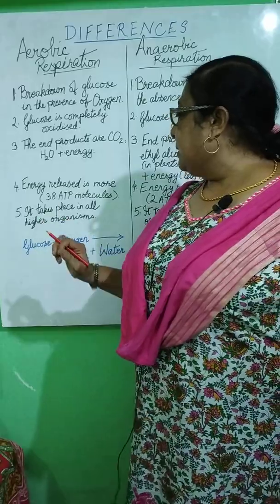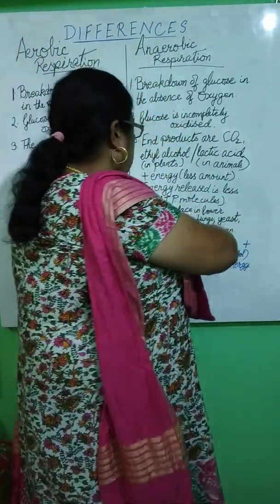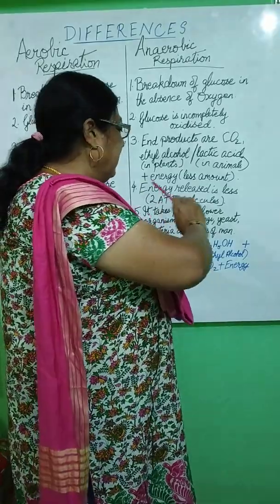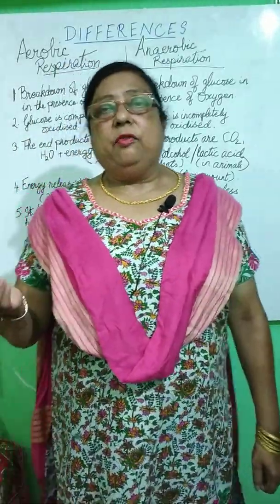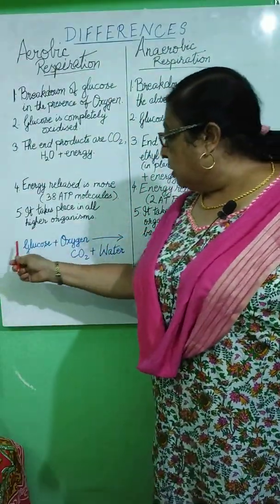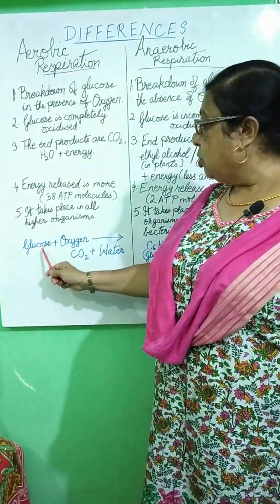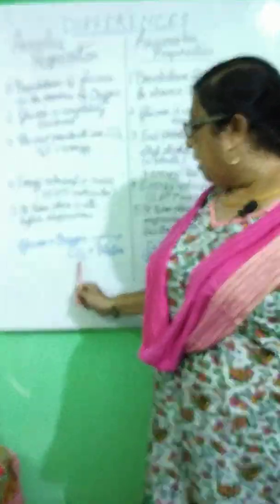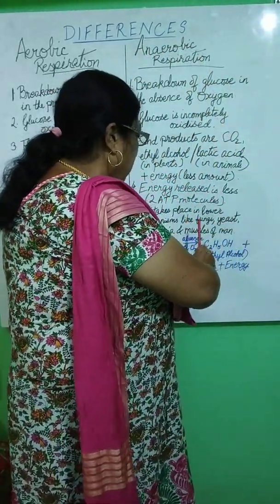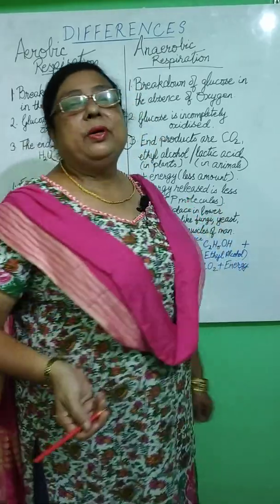Aerobic respiration takes place in all higher organisms, while anaerobic respiration takes place in microorganisms like fungi, yeast, and bacteria, in some parasitic forms, and also in the muscle cells of humans. The equation of aerobic respiration: glucose combines with oxygen to form carbon dioxide, water, and energy. In anaerobic respiration: glucose, in the absence of oxygen, gets converted to ethyl alcohol, carbon dioxide, and energy.